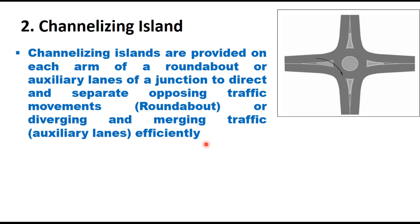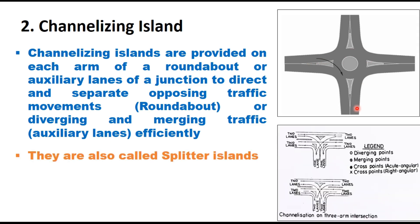The second type is channelizing islands. These are provided on each arm of a roundabout, or on auxiliary lanes of a junction to direct and separate opposing traffic movements at a roundabout, or diverging and merging movements in auxiliary lanes efficiently. They discourage direct movement of vehicles and force vehicles to move around the central island to make a right turn. They are also called splitter islands because they split two diverging movements — right turn and left turn — at intersections.